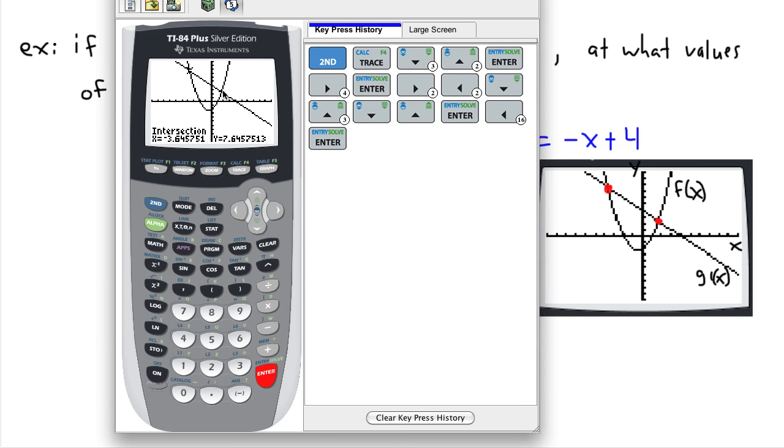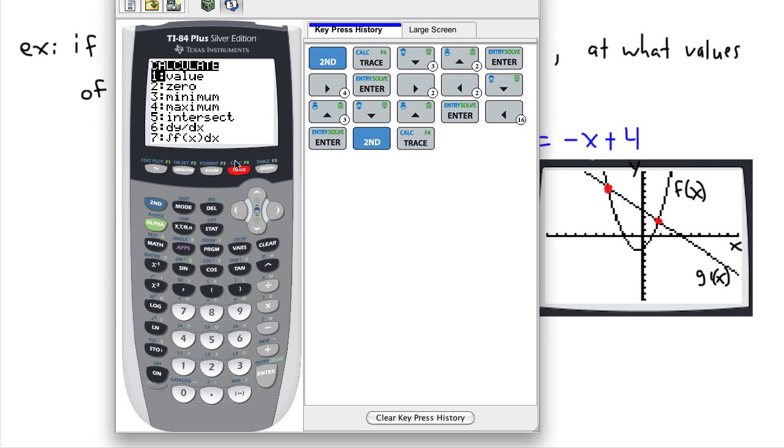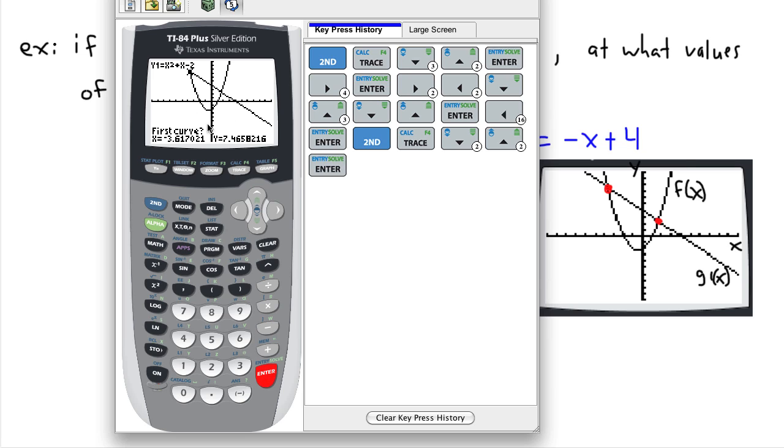And the other one, if I want that one, I do the same thing. So hopefully you can guess that I do second, calc. And I ask it for the intersection. If I want to be quicker, what I can do is just press five. That's even quicker than just scrolling up or down. So first curve. Am I really on the first curve? I'm on one of them. Sure, that's one of them. Second curve. Yes, I'm on that one. And then it asks me for a guess. So I have to put my cursor this time to the right if I don't go too far. Because my little emulator is a little bit slow sometimes. So I press enter.